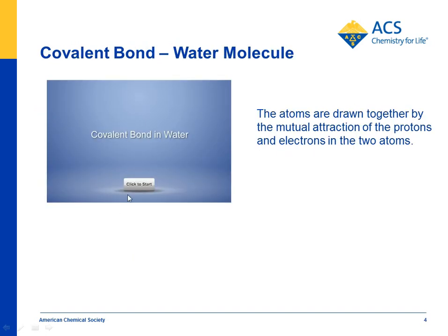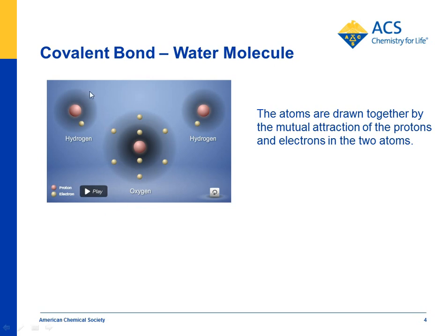Does the same thing happen in water, or something similar? In this case, we show the two hydrogens in water, because water is H₂O — two hydrogens and an oxygen. It makes sense that these should be drawn the way they are, because oxygen has two electrons on the first energy level and six on the second.